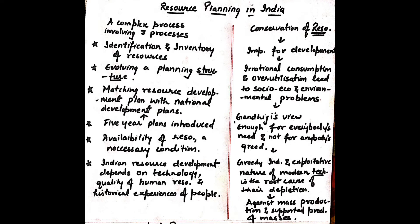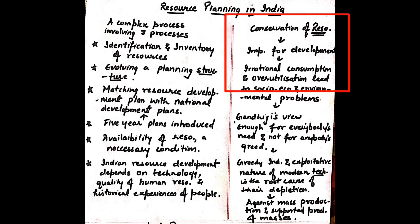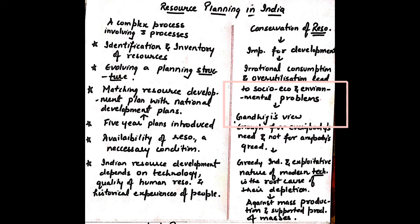Moving on to the next topic, that is conservation of resources. As we all know, resources are important for our development, but human beings, because of their selfish motives, are using them irrationally, which leads to socio-economic and environmental problems. Gandhiji was of the view that there is enough for everybody's need and not for anybody's greed.